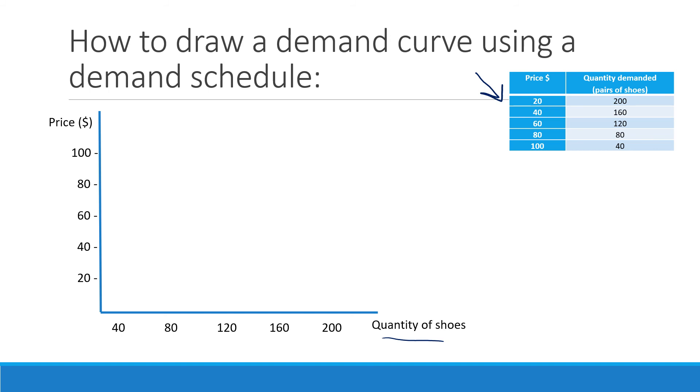The next step after that is actually starting to plot your points. So we look at our demand schedule here, and we can see that at $20, there are 200 shoes demanded. So we will try our best to line up and put a little dot there.